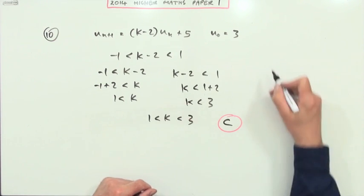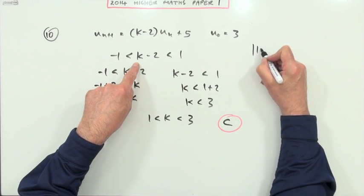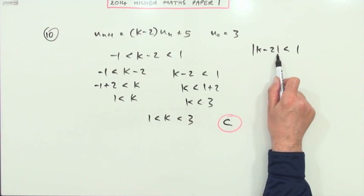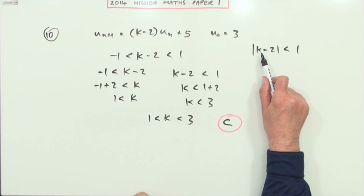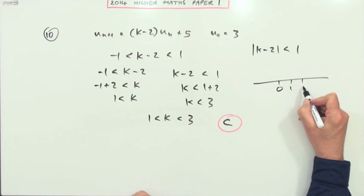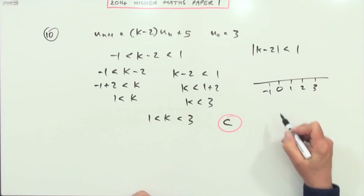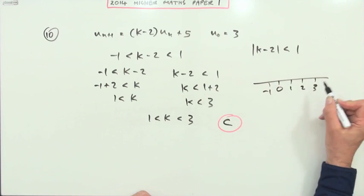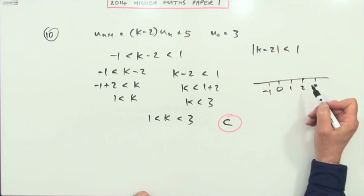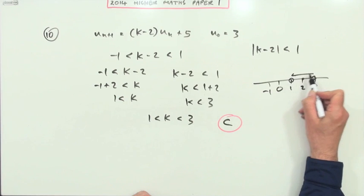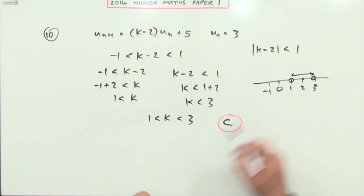There is another way to do this using absolute value: write |k - 2| < 1. What that absolute value means is the distance of k from two. On a number line, the distance of k from two must be less than one — so if two is the centre, you have to be less than one away on either side, meaning k must be between one and three.